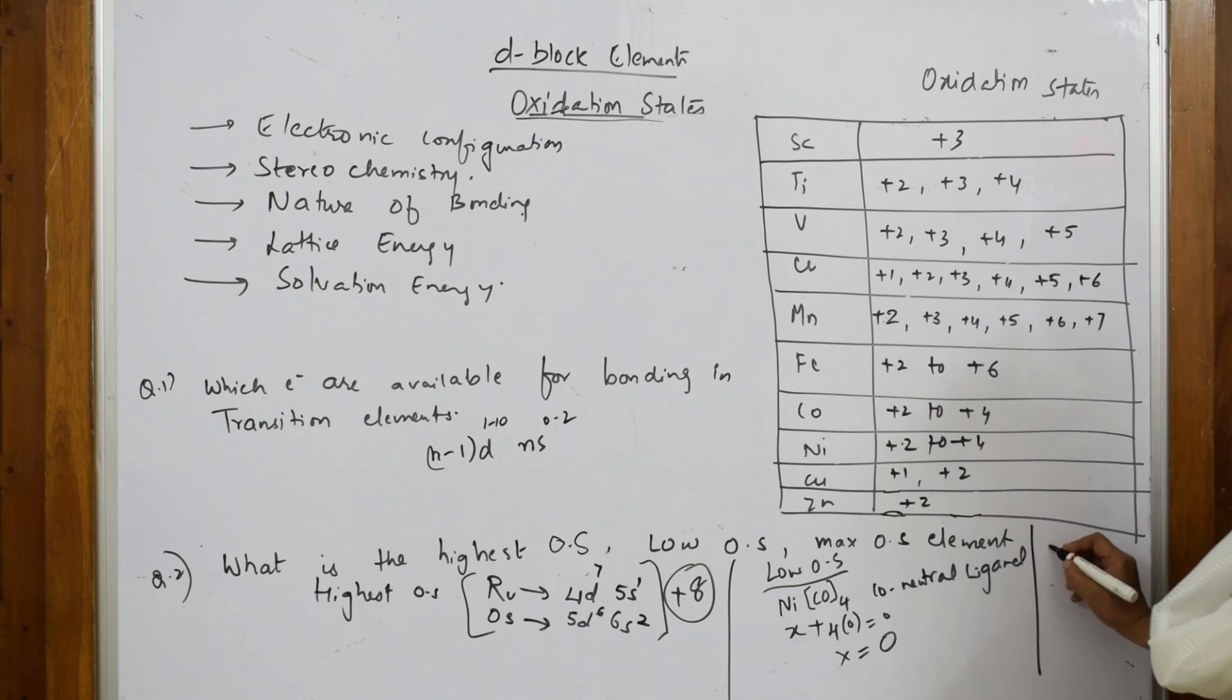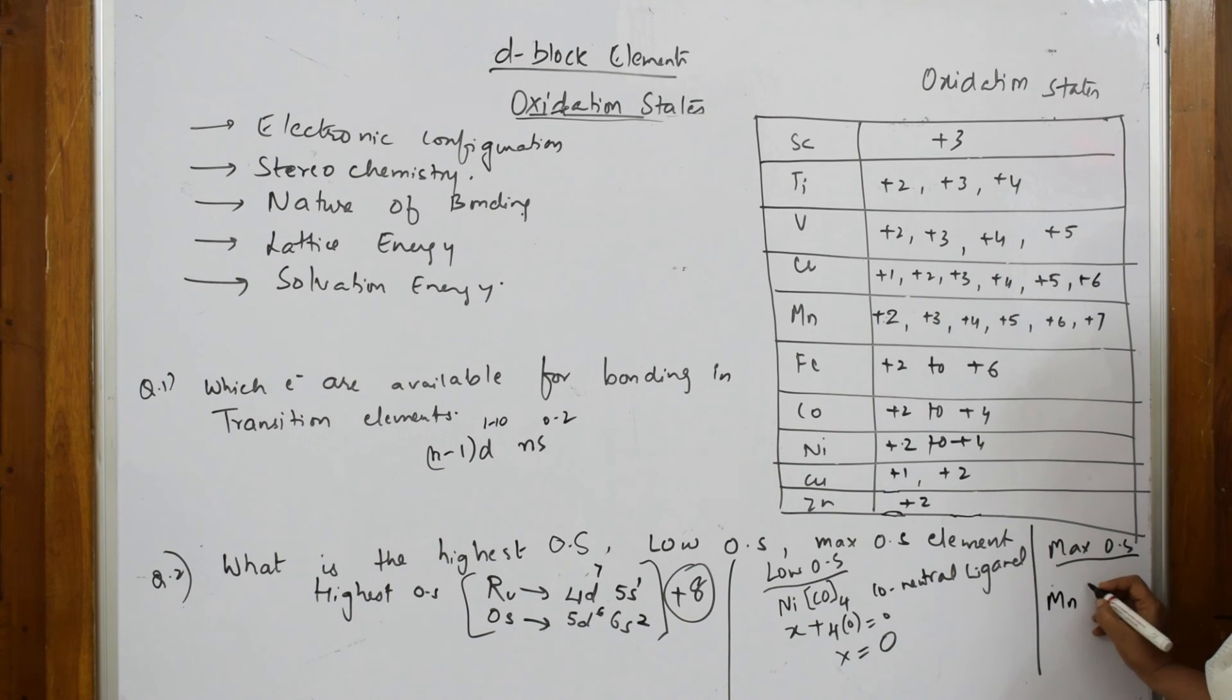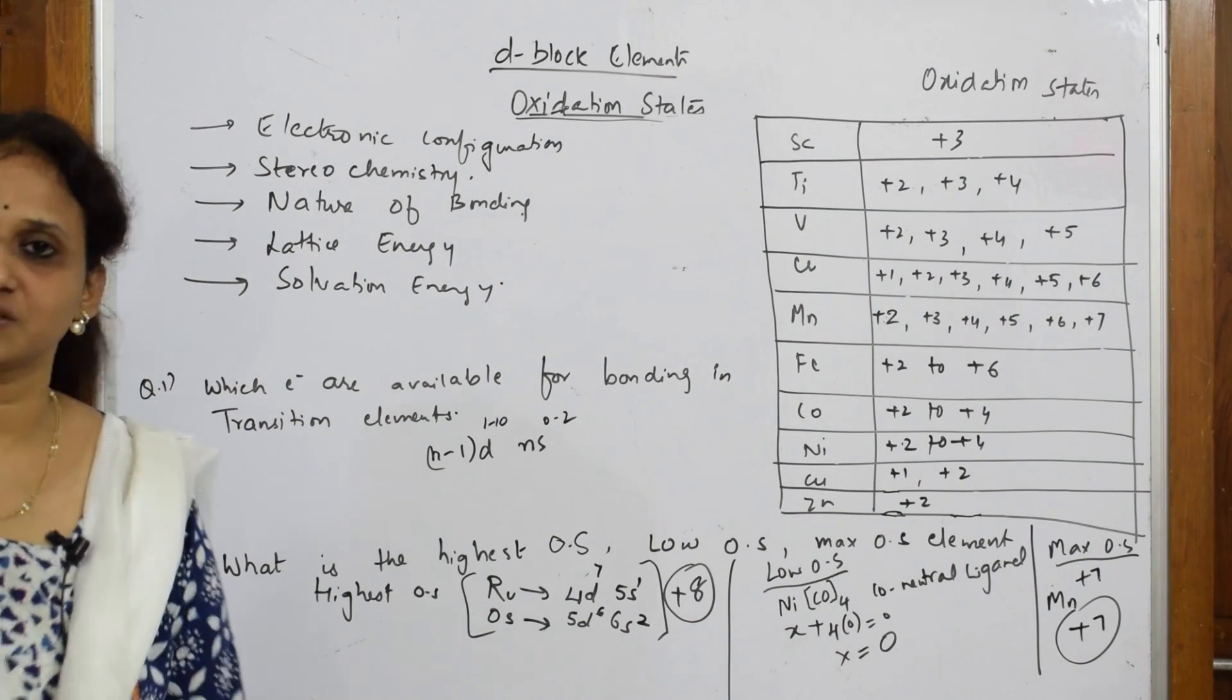Next, maximum oxidation state. Manganese is showing maximum oxidation state, that is plus 7. So plus 7 is the maximum oxidation state. Simple question, just note the concept.